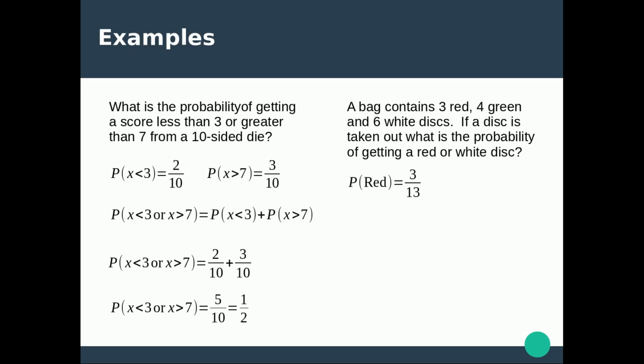The probability of getting a red disc is 3 out of 13, because there are 3 red discs and 13 discs altogether. The probability of getting a white disc is 6 over 13. So the probability of getting a red or white is those two probabilities added together: 3 plus 6 is 9, so the final result is 9 over 13.